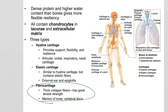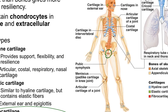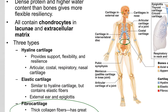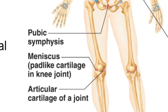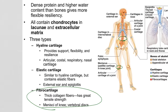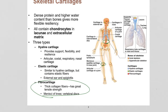Fibrocartilage: anytime fibrocartilage forms a joint, you call it a symphysis. You know the pubic symphysis, holding the anterior portion of the hip together. We also talked about symphyses between vertebral bodies — your vertebral discs are symphyses as well. The menisci are another example: one meniscus for the anterior and another for the posterior side of the articulation between the condyles of the femur and tibia in the knee. Be prepared to recognize where you would find those different types of cartilage.